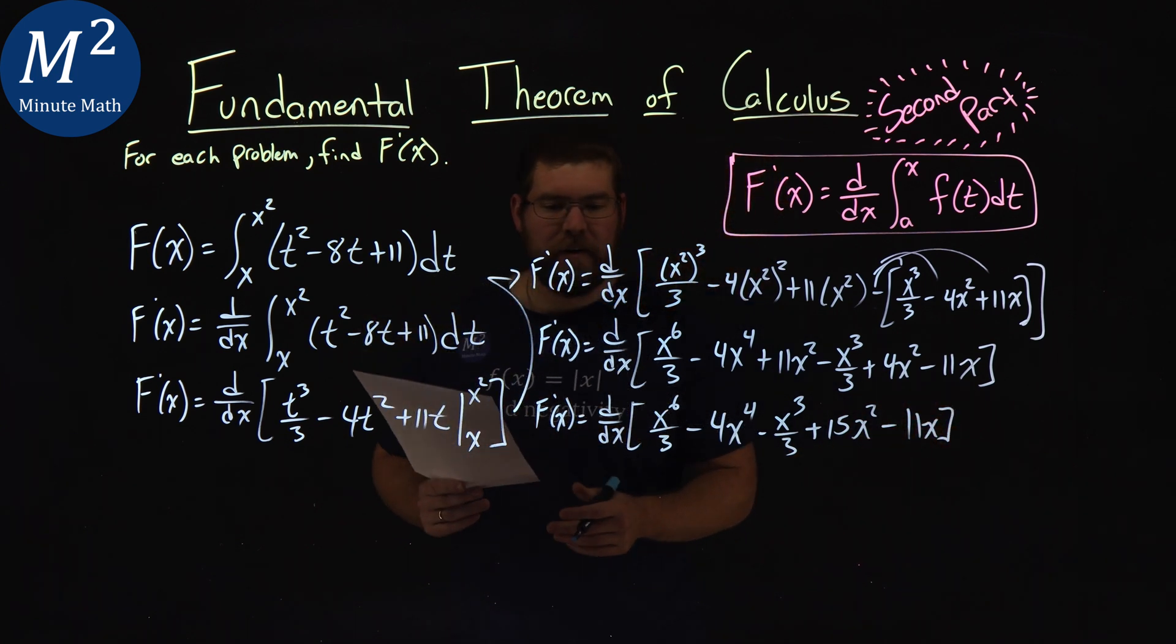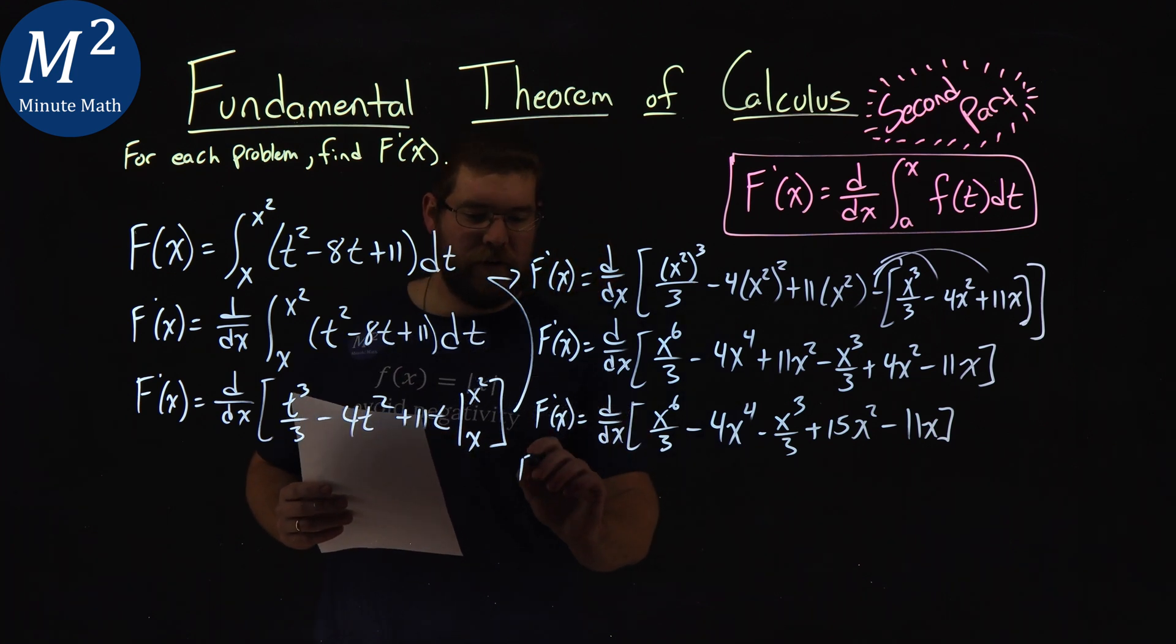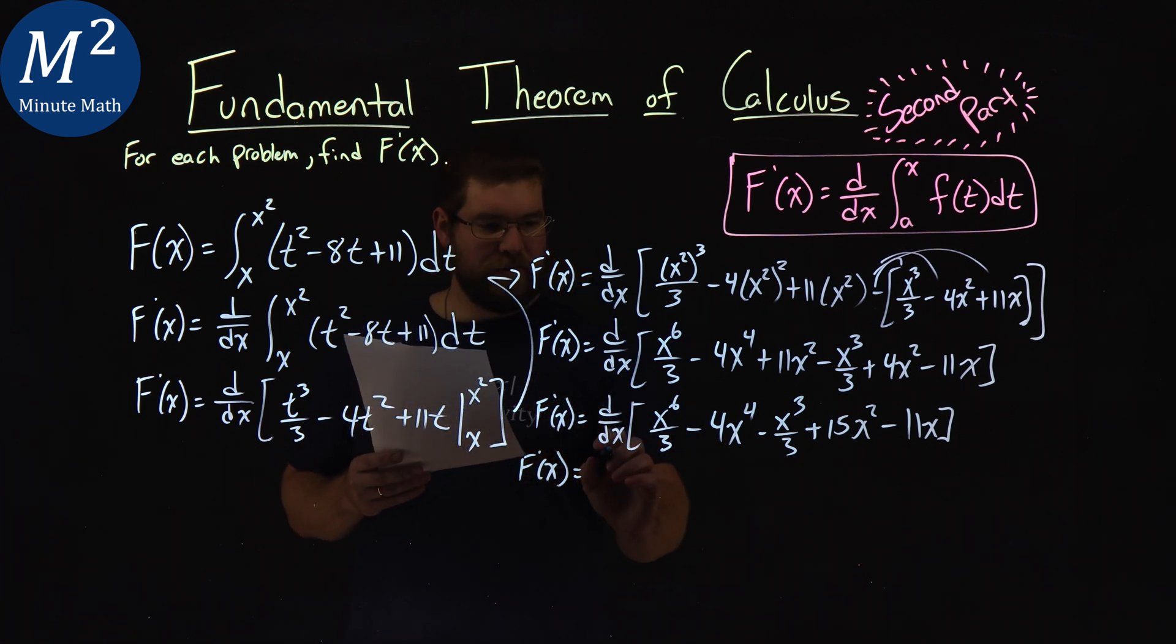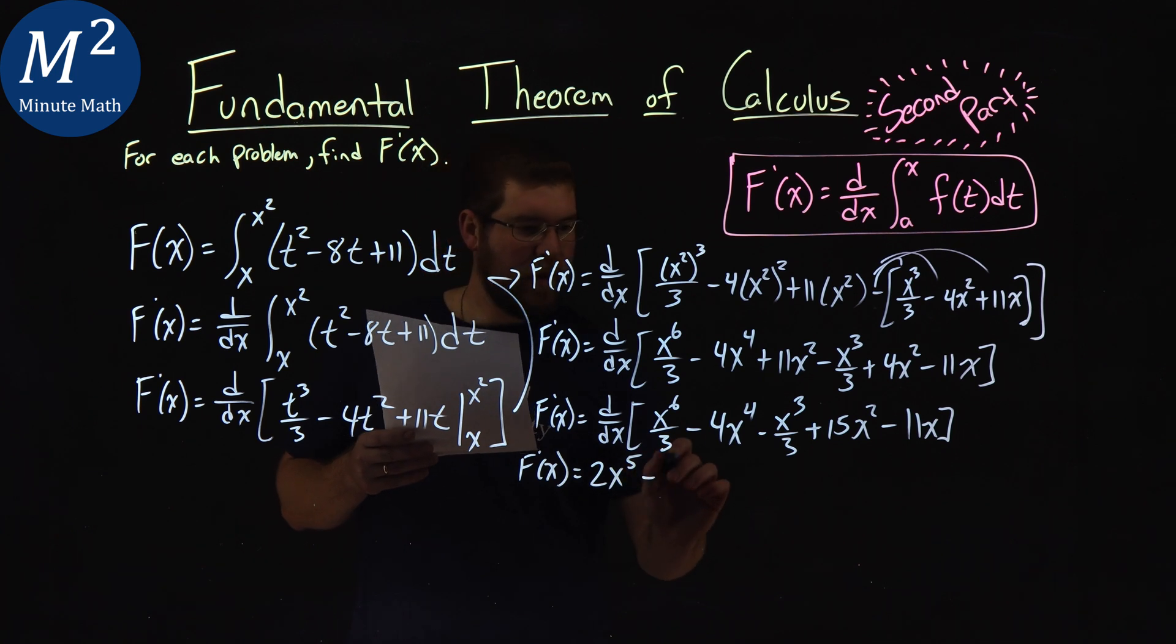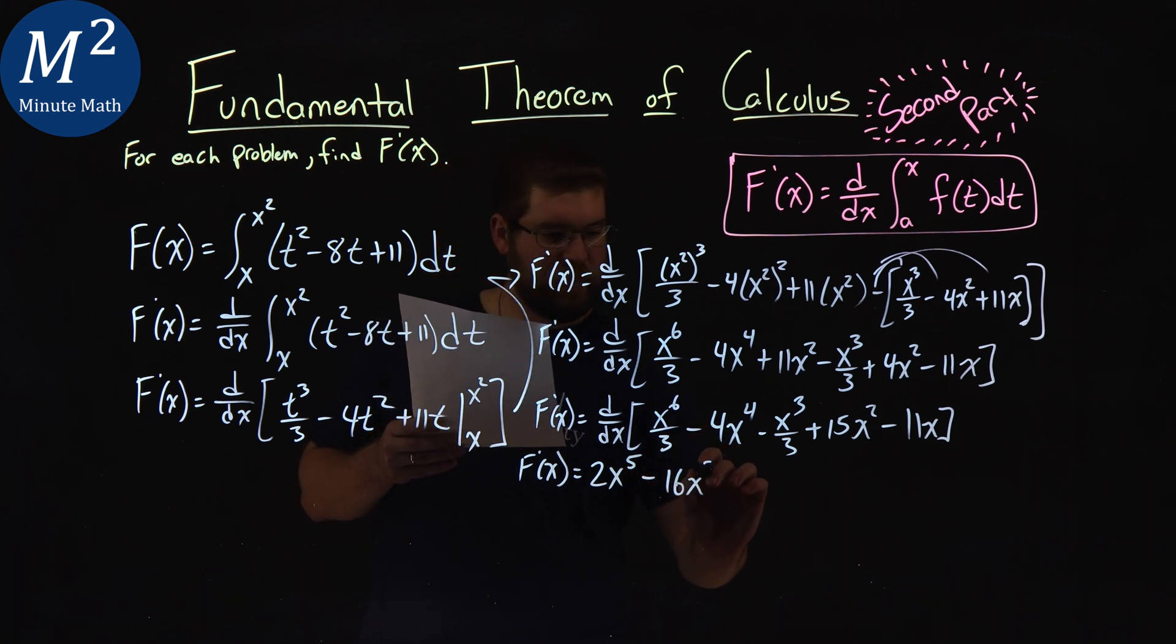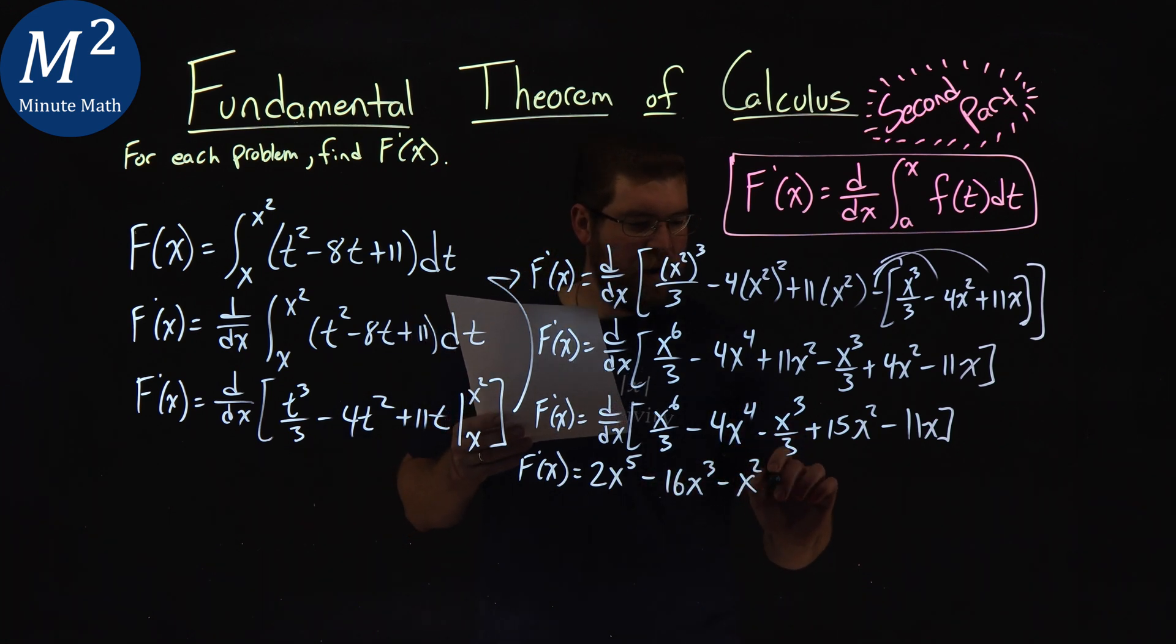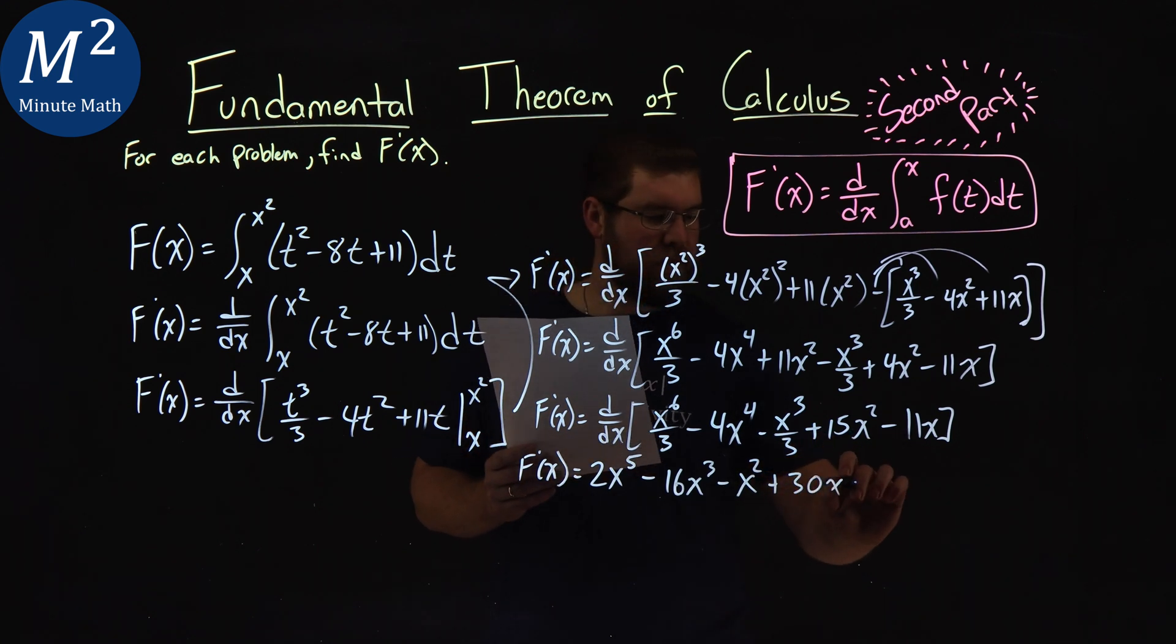Oof. So, after all that, we need to take the derivative here. And this one, it's not too bad. Derivative of x to the sixth over 3 is a simplified 2x to the fifth power. Minus derivative of 4x to the fourth is 16x to the third. Minus x to the third over 3 is just x squared. Plus 15x squared derives to be 30x. And then, minus 11x is just minus 11.